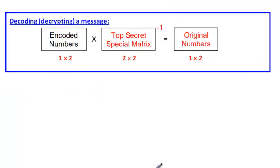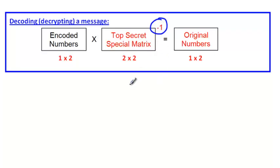Now let's figure out how to decode messages. To decode, you need the top-secret matrix, but this time you start with the encoded numbers and work backwards to the original numbers. Instead of multiplying by the top-secret matrix, you multiply by its inverse. Type it out and use the inverse key. Everything else is the same.